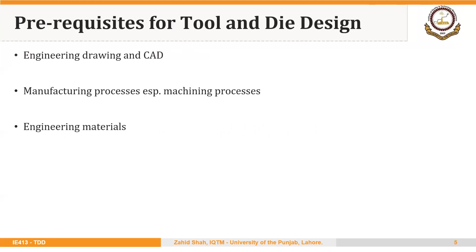So these are three major prerequisites for this course. The most important is the first one — engineering drawing and CAD. We will review some very basics of drawing in the next lecture, inshallah. Manufacturing processes, especially machining processes, are another important prerequisite for this course. And of course you do need some knowledge of engineering materials as well, because specifying materials is an integral part of any design.